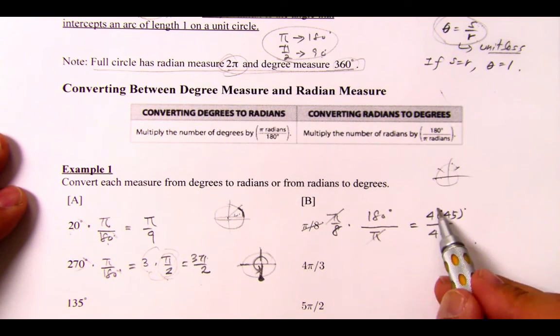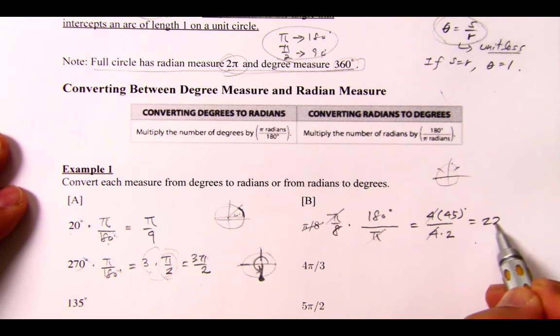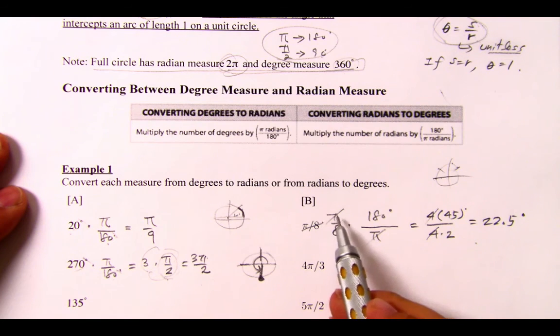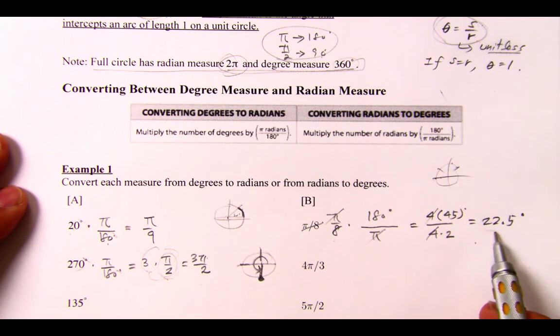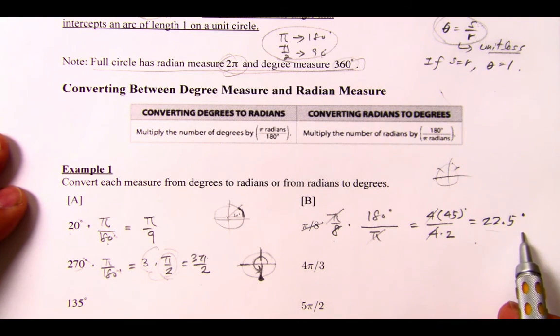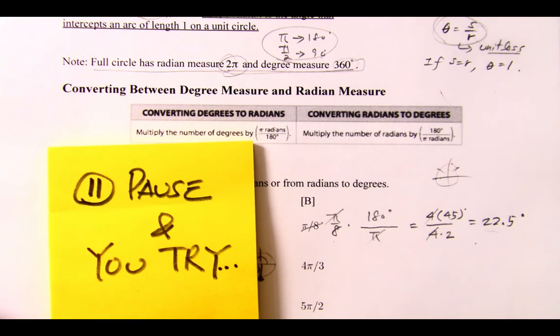And 45 divided by 2 is 22.5 degrees. So basically, π over 8 radians is equal to 22.5 degrees. Why don't you pause and try this question?